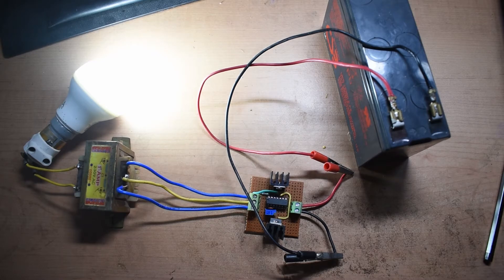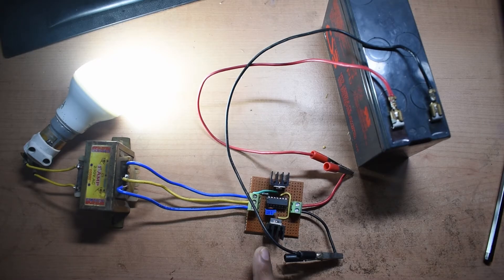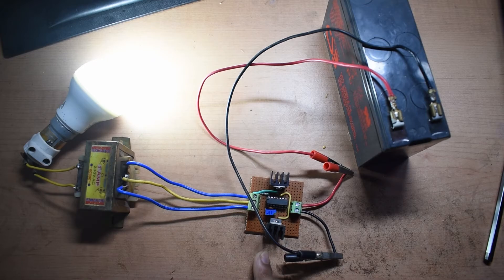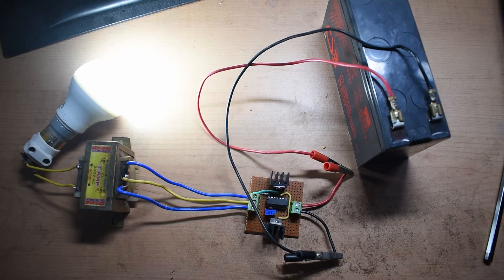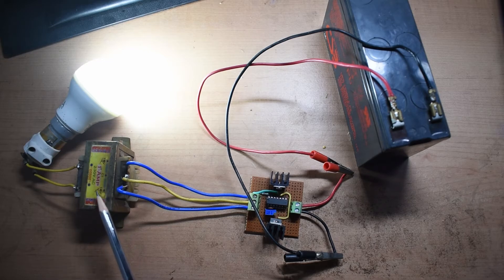Now if you want to increase the power output of this inverter then you can obviously do that by putting more MOSFETs in parallel. Obviously this MOSFET can easily handle up to 500 to 600 watts of power if you use a higher power transformer.